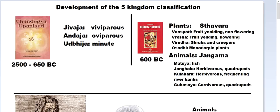Monocarpic means having one carpel. The category 'fruit-yielding and non-flowering' does not actually exist — such plants are not there. At that time people's knowledge was limited; they were not able to see the flowering phase and could only see the fruit phase. Our common sense tells us that fruit develops from the ovary of the flower, so fruit-yielding non-flowering is not possible.